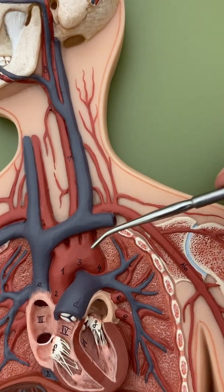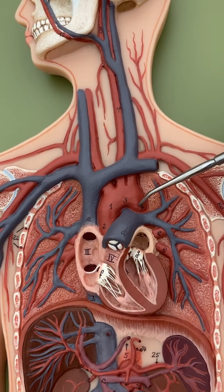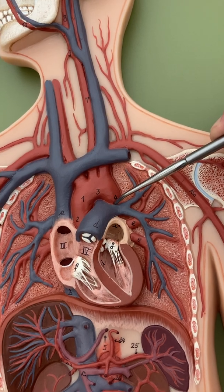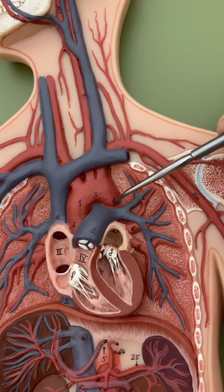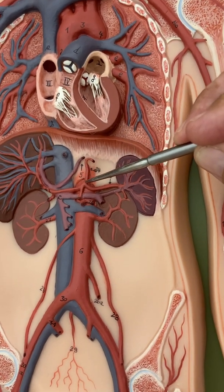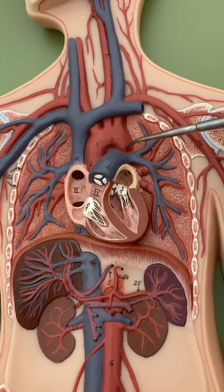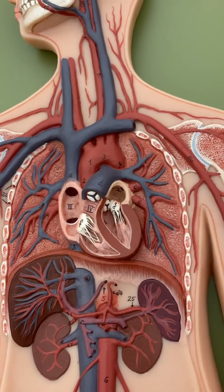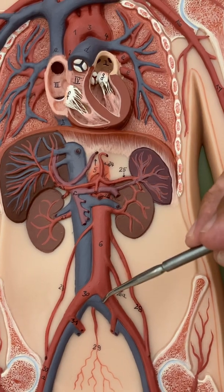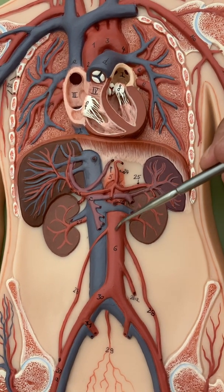Now we have to supply blood to the inferior body — the torso, legs, and organs. The aortic arch curves and starts going downward; at this point they call it the descending aorta. It goes behind the heart and out through the diaphragm down into the abdomen. The portion from behind the heart to the diaphragm is sometimes called the thoracic aorta, and from the diaphragm down to the hips the abdominal aorta, but the whole downward portion is the descending aorta.